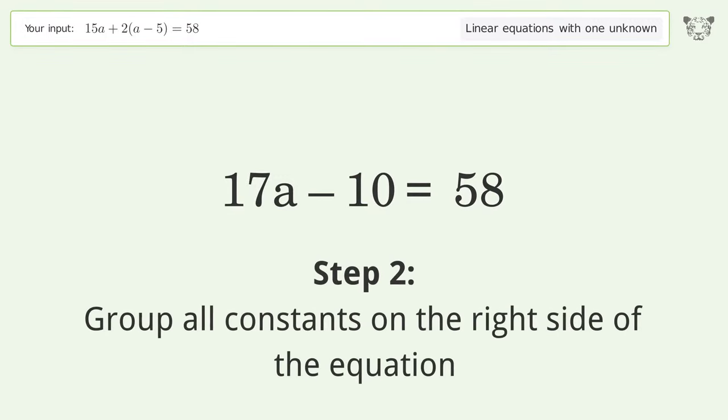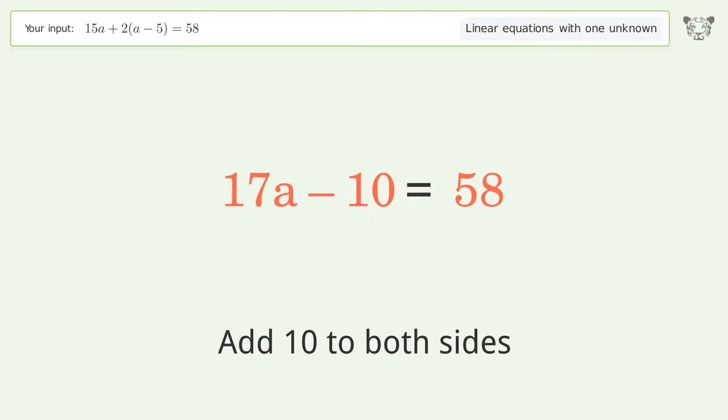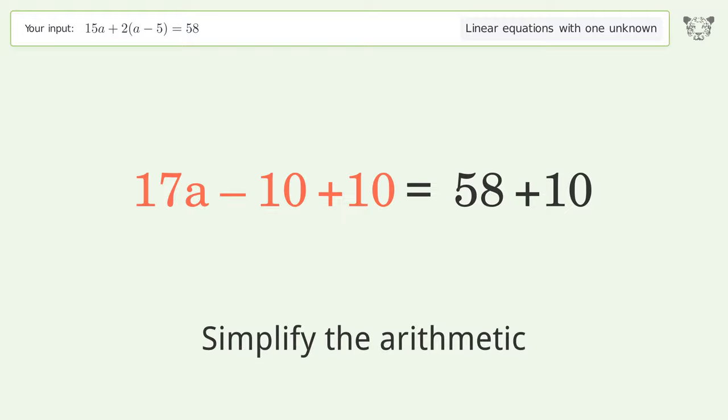Group all constants on the right side of the equation. Add 10 to both sides. Simplify the arithmetic.